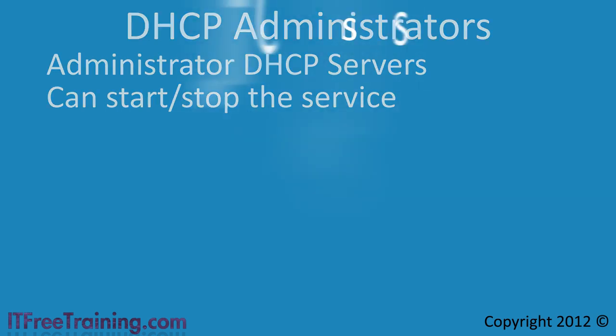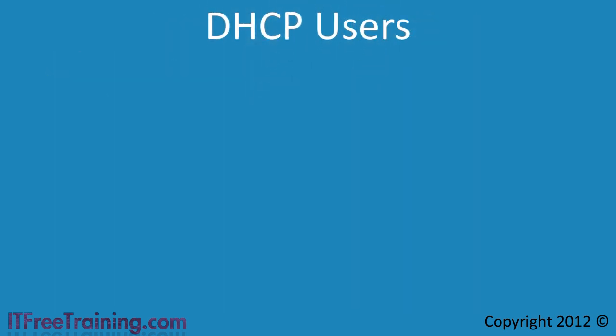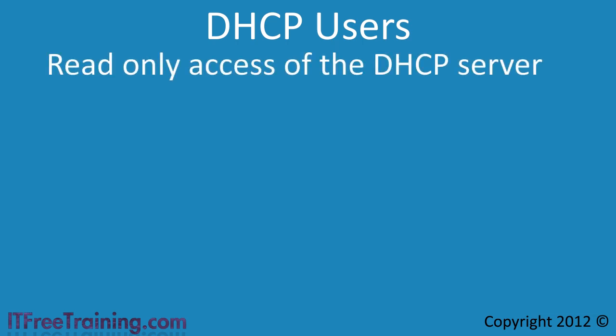The next group is DHCP Users. This group gives the user read-only access to the DHCP server. A user in this group can read the configuration of the DHCP server and the records created in it. However, they cannot make any changes.